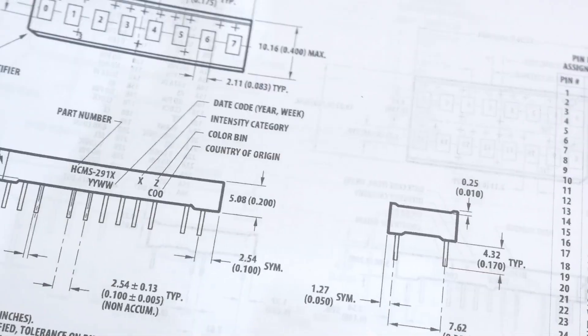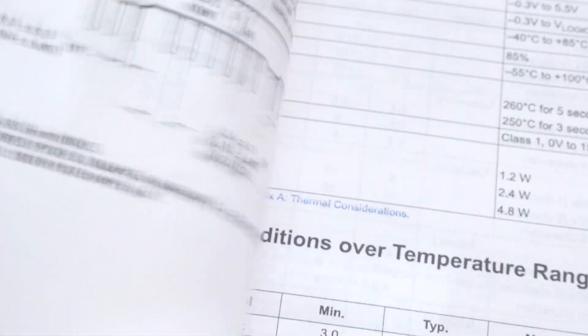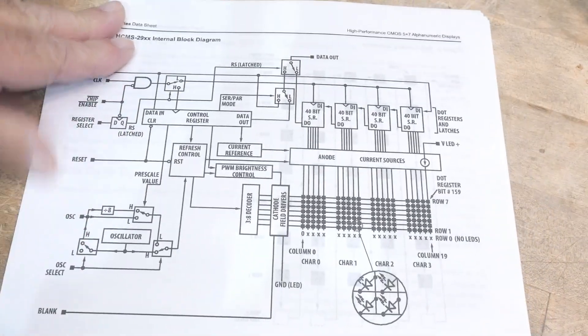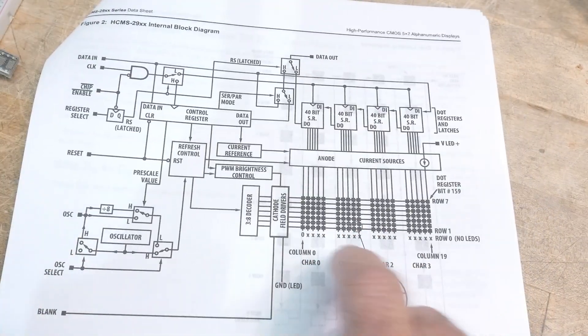All right, so let's see here. There's a block diagram in here. Let's look at the block diagram. Yeah, this one. So this is what's inside this beast.